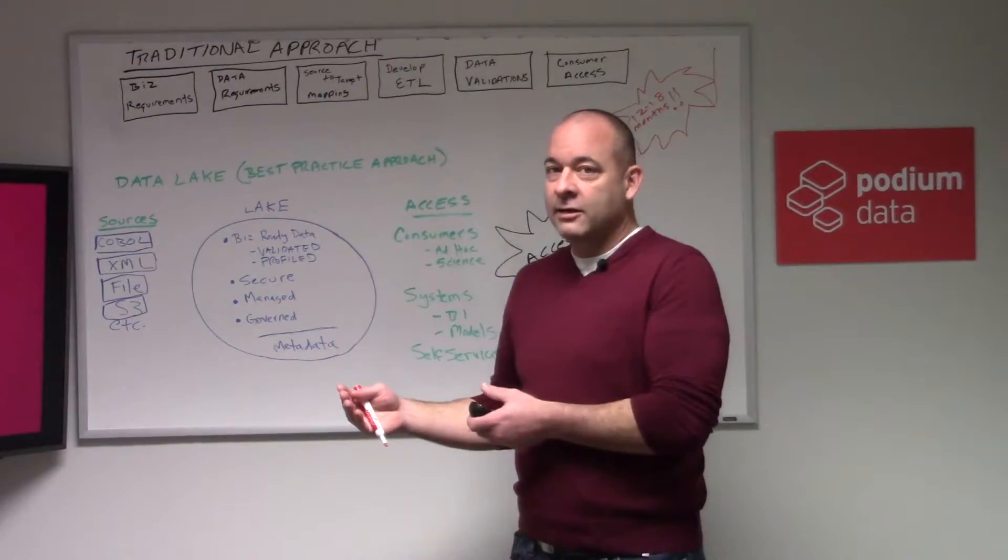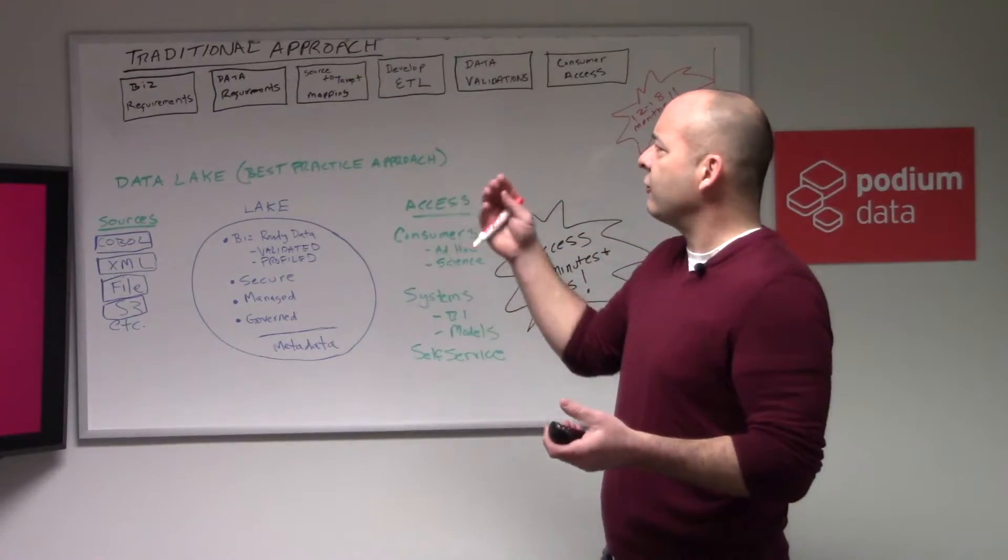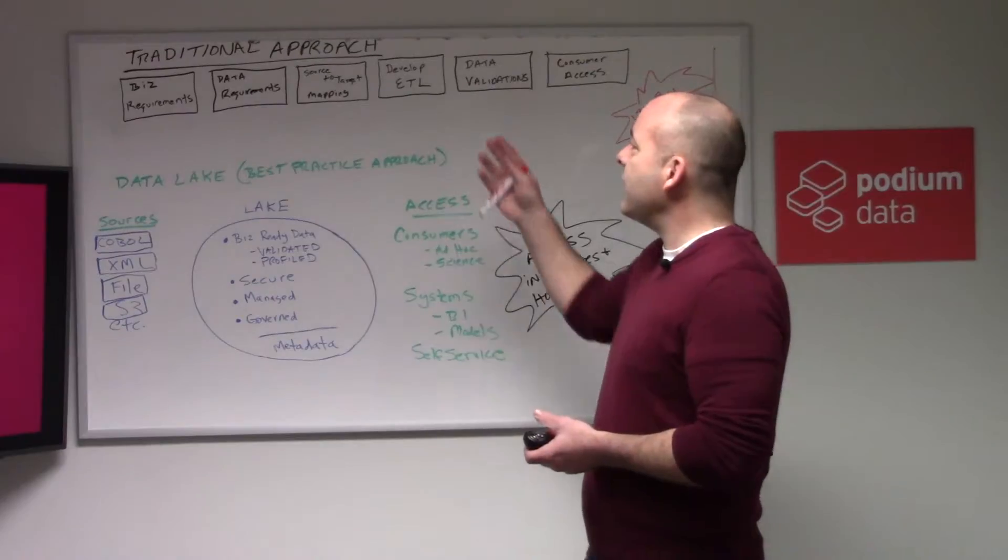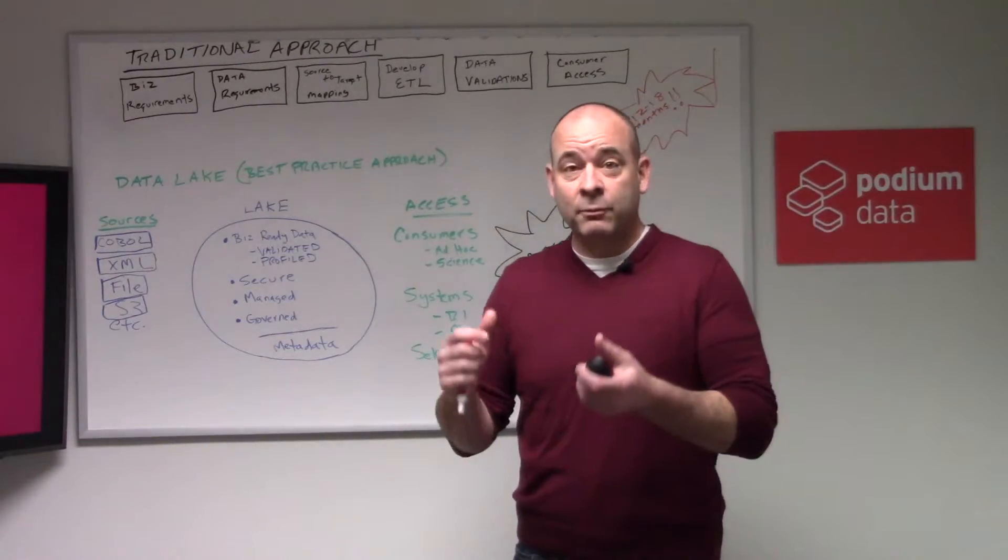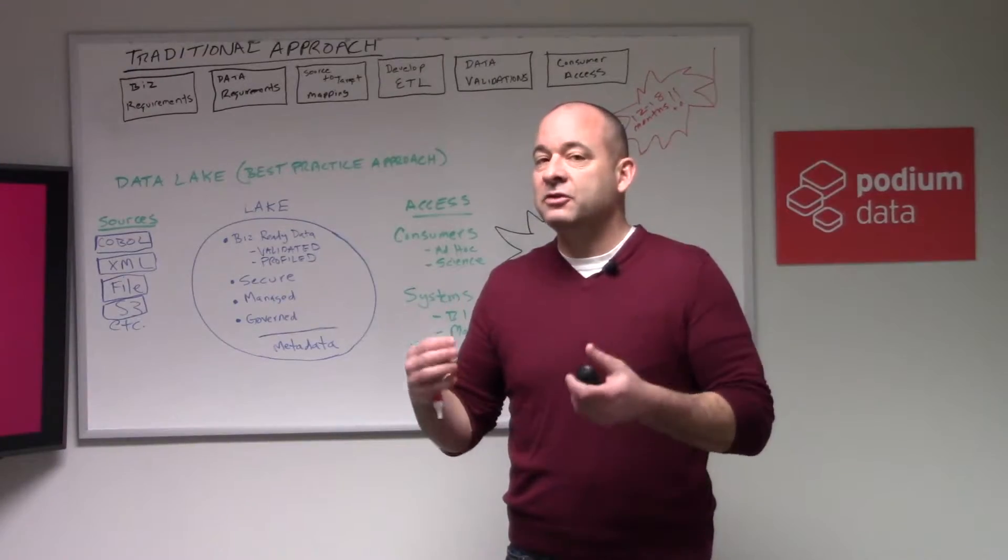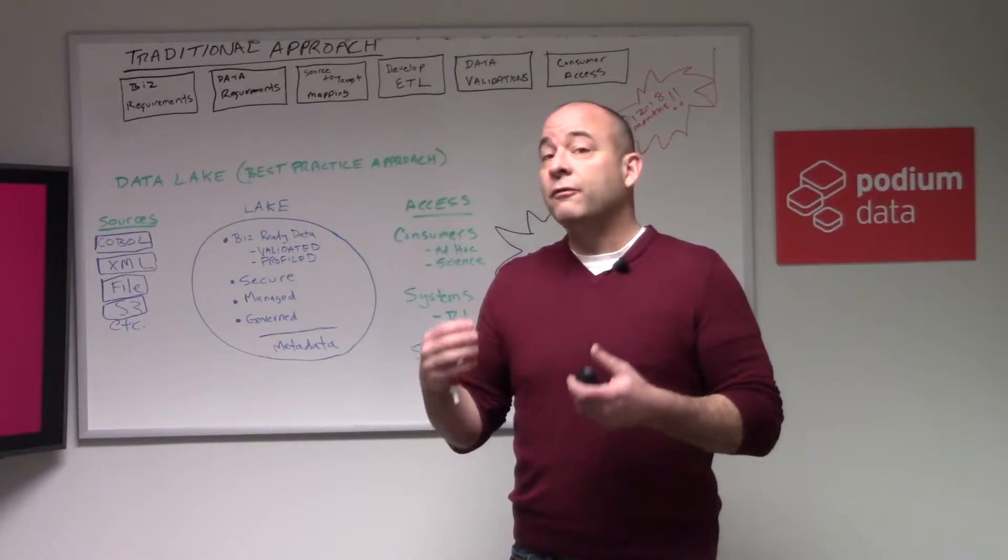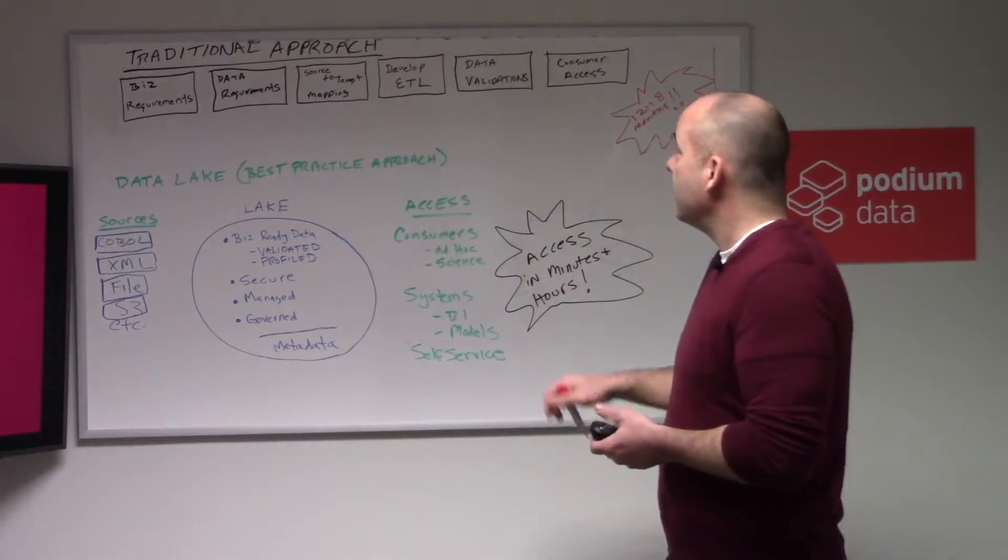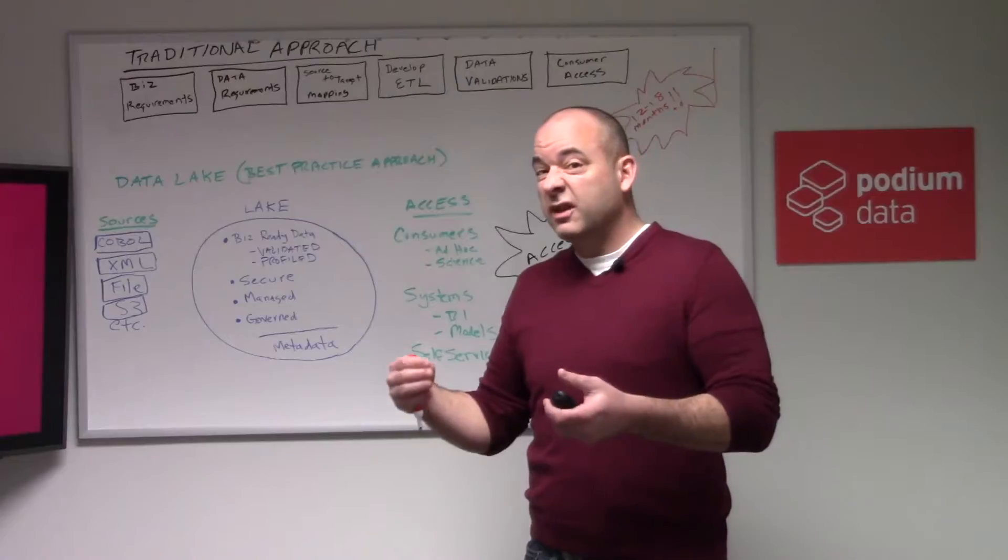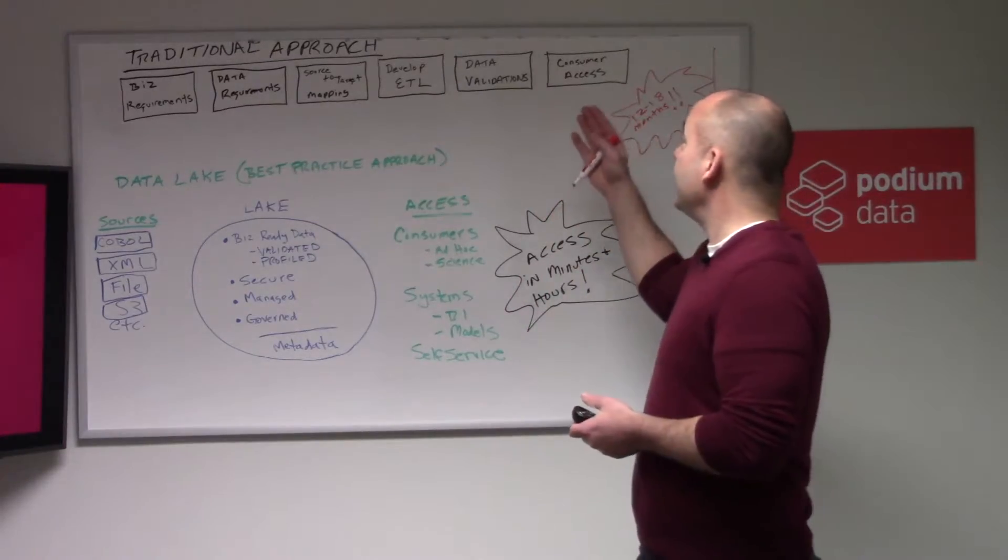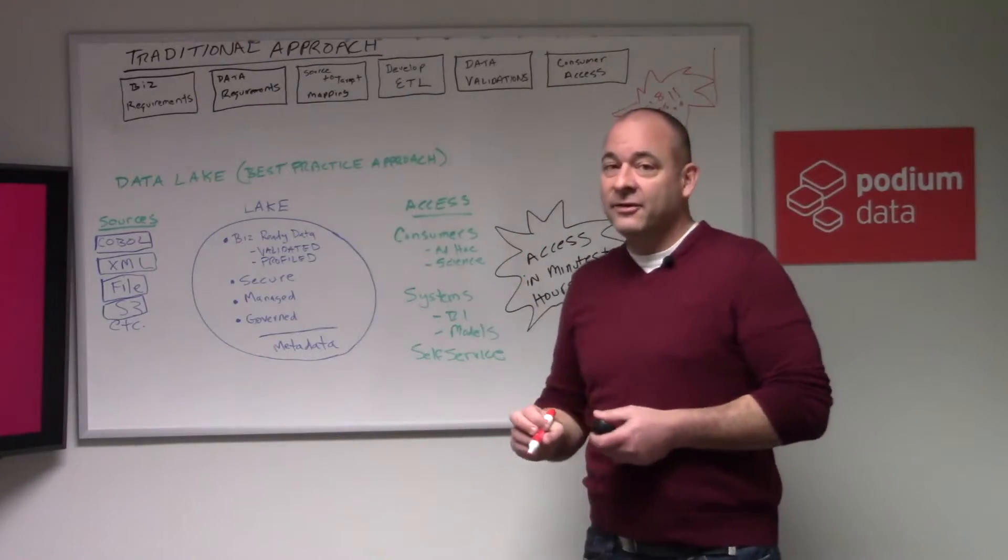You would focus on your target data model and map those data sources to that mapping. Then you would move into really what was the most expensive and time-consuming part of the project, which is that ETL development, such that you can move the data from your source into your target. Then you would wrap that up with validating the data, making sure you got what you think you got, and then finally your data consumers would have access to the data.